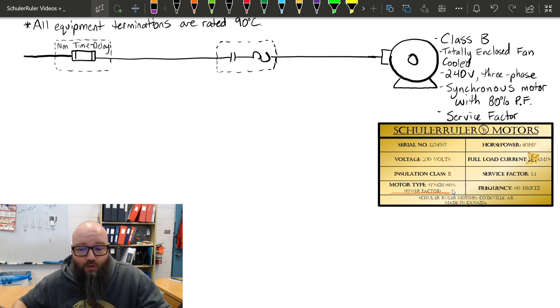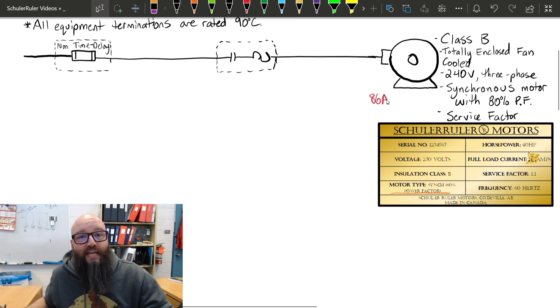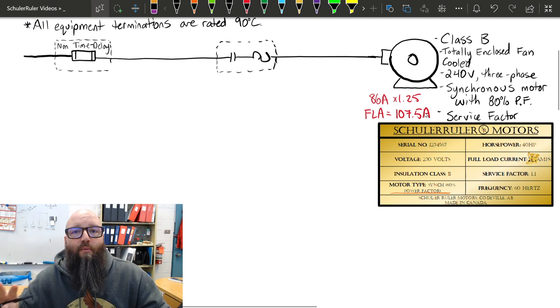Cross-referencing voltage and horsepower, we find out that normally with this unity power factor we'd be looking at 86 amps as an FLA. But because it's an 80% power factor, we're going to use that times 1.25 to determine what our actual FLA is that we're going to use in this question. Fire that into the calculator. We find out our FLA in this example is going to be 107.5 amps. That's our magic number for our motor calculation.